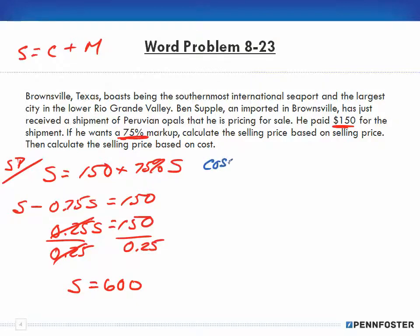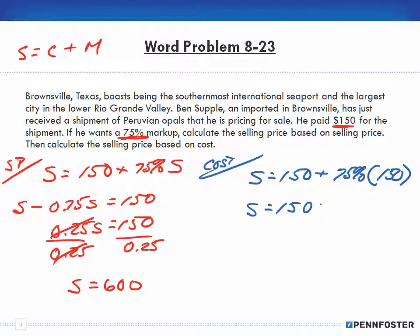Now, based upon the cost, we have our selling price is equal to, we know our cost is 150. And we're marking it up 75% based upon that cost of 150. So S is equal to 150 plus 75% of 150. So if we take 150 times 0.75, we end up with 112.50. And add 150. And we get 150 plus 112.5. And we end up with $262.50.